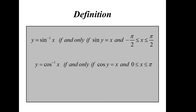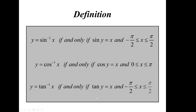What about inverse of cosine of x? It's quite similar: y equals inverse of cosine of x if and only if cosine of y equals x, and the range is bounded from 0 to pi. For inverse of tangent of x: y equals inverse of tangent of x if and only if tangent of y equals x, and the restricted range is from negative pi over 2 to pi over 2.